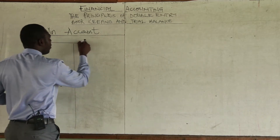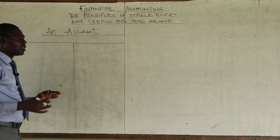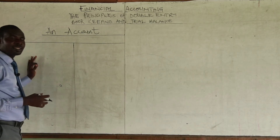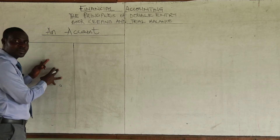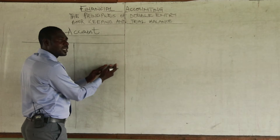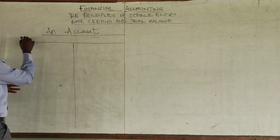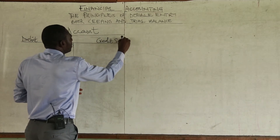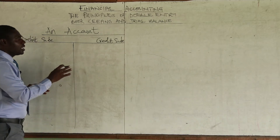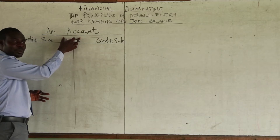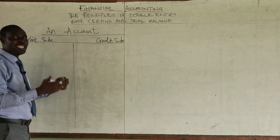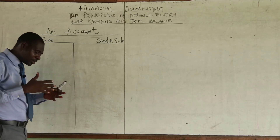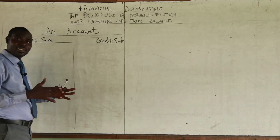Because we write the name of the account on top, we sometimes refer to this as the T-account. The left hand side is referred to as the debit side, and the right hand side is referred to as the credit side.